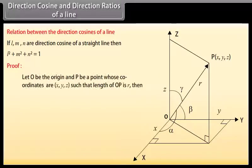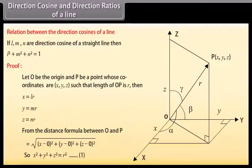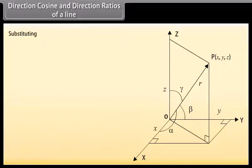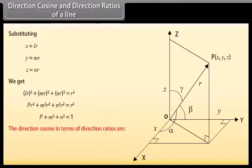Proof: Let O be the origin and P be a point whose coordinates are X, Y, Z such that length OP equals R. Then X equals LR, Y equals MR, Z equals NR. From the distance formula, X squared plus Y squared plus Z squared equals R squared. Substituting X equals LR, Y equals MR, Z equals NR, we get L squared R squared plus M squared R squared plus N squared R squared equals R squared, therefore L squared plus M squared plus N squared equals 1.